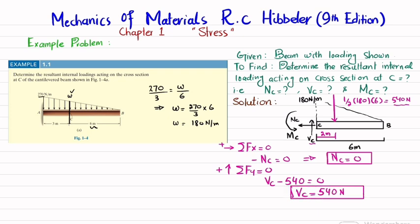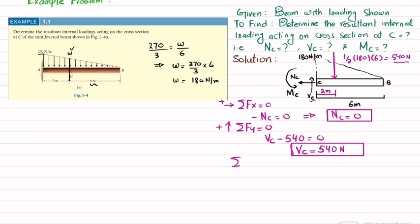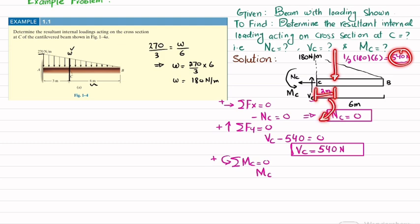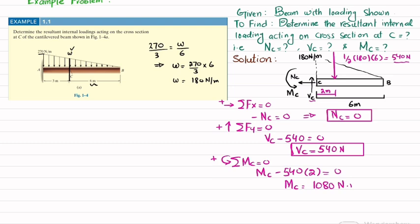Now we will find Mc. We apply the equation of equilibrium: the sum of all moments about point C equals zero, taking counterclockwise as positive. One moment is the reaction moment Mc, written as plus Mc. The second moment is due to the 540 N load at a perpendicular distance of 2 meters, producing a clockwise moment, so minus 540 multiplied by 2 equals zero. From here, the moment at point C equals 1080 N·m. This is the answer using segment CB.